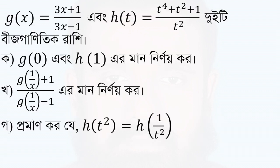If you have given the function g(x) equal to (3x+1)/(3x-1), and s(t) equal to (t⁴ + t² + 1)/t², then we need to find g(0) and s(1).